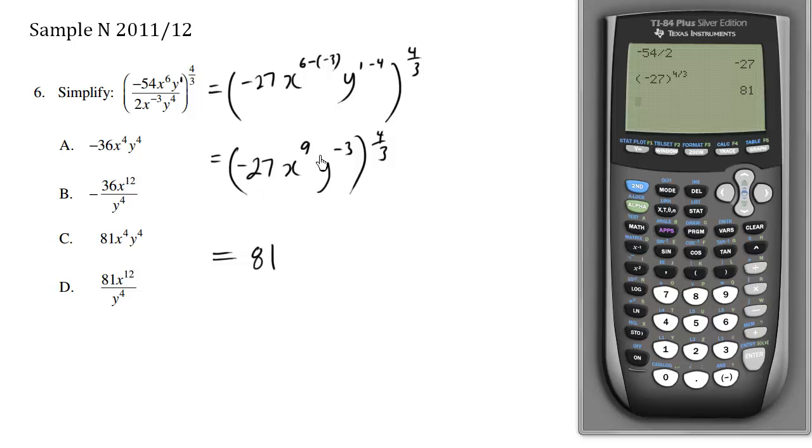So we now have x to the 9. We're going to multiply these exponents since we have exponent bracket exponent. So this is x to the 9 times 4 thirds. So the 9 and the 3 cancel out and we get a 3 on the numerator, 3 times 4 is 12. So essentially it's x to the 12th.